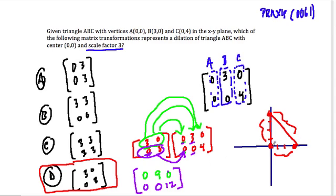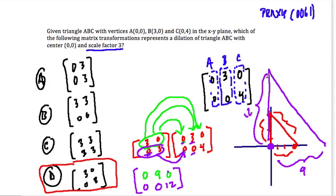So our new numbers here are going to be (0,0), then (9,0), and then next we have (0,12). Now if we wanted to plot this, we have (0,0), (9,0) all the way down here. That makes sense. This would be 3 times longer than 3. It's 9. And then up here, we have 12. That makes sense, too, because first we had 4. Now we have 12. That's a scale factor of 3. D is the correct answer.